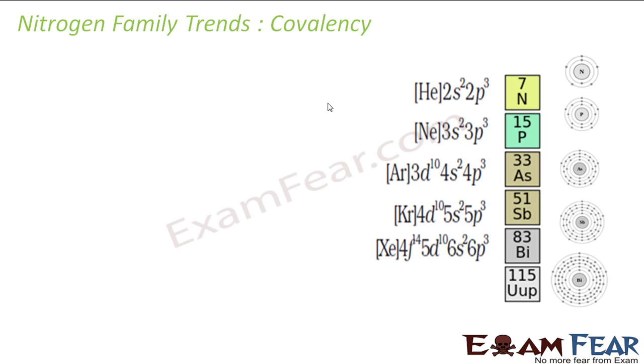The next is covalency. So what is covalency? Covalency is the number of electron pairs an atom can share with other atoms. Number of electron pairs an atom can share with other atoms.